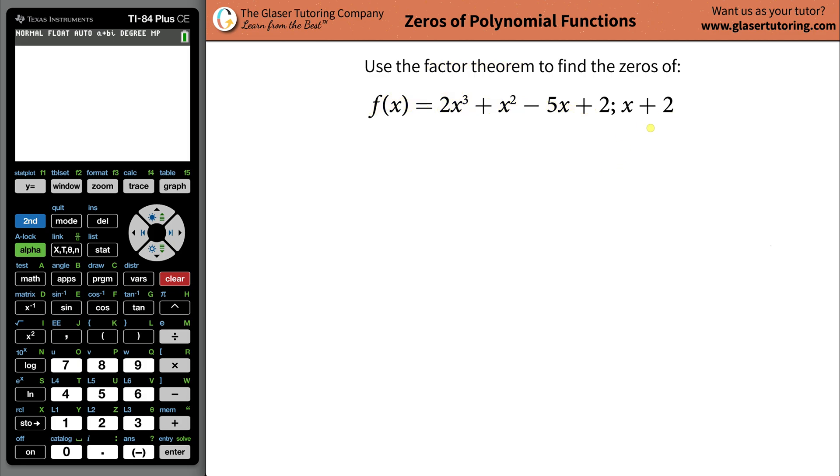factor theorem to find zeros of a certain polynomial function. All right. Now, what we have here is we have a supposed factor of this polynomial function, and what we have to do is we have to use the factor theorem to see if we can find all of the zeros of this function.